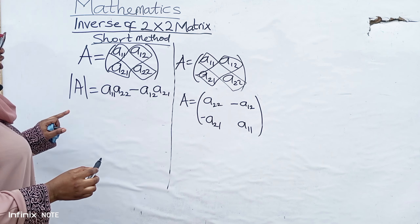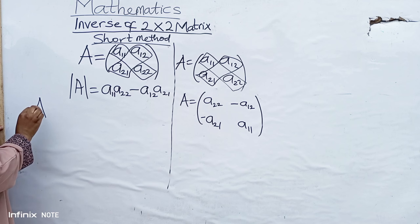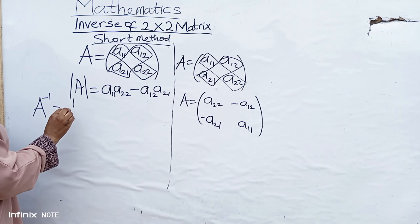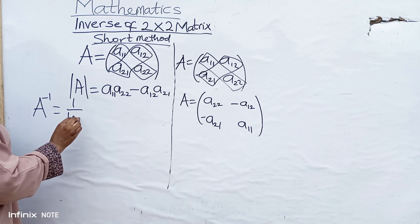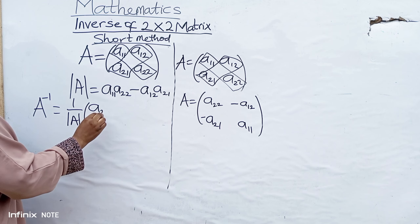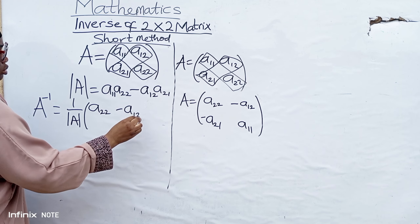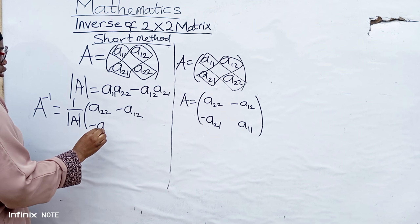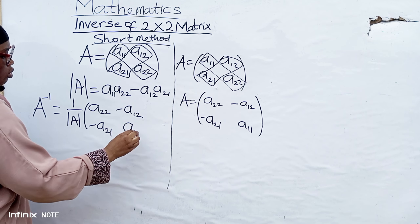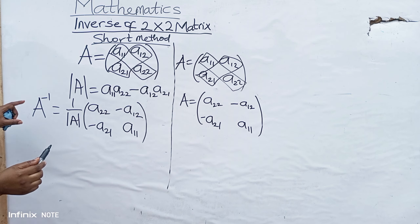After doing that, your A inverse will be equal to 1 over the determinant of A, multiplied by the matrix: A22, minus A12, minus A21, then A11. That is the inverse of a 2 by 2 matrix.